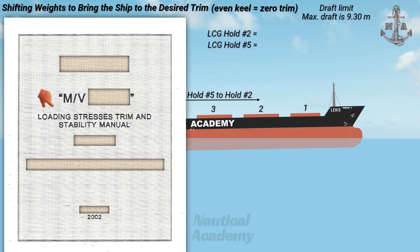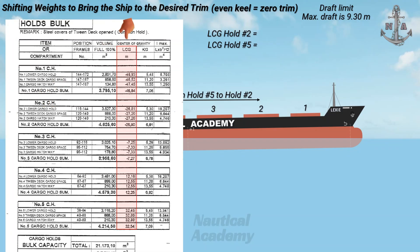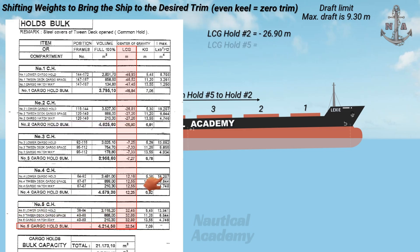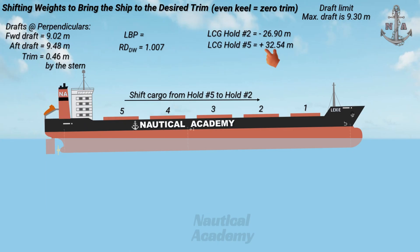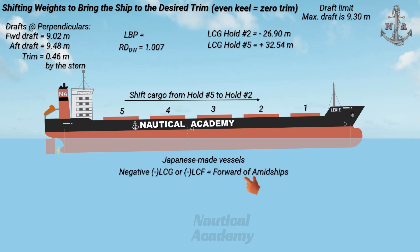We can find the LCG values in the ship's stability booklet. In the loading plan, we can find the LCG for each cargo hold. For cargo hold number two, the LCG is negative 26.90 meters. And for cargo hold number five, the LCG is positive 32.54 meters. It is common for a Japanese-made vessel that if the LCG or LCF is negative, it is measured forward of amidships, and when it is positive, it is aft of amidships.